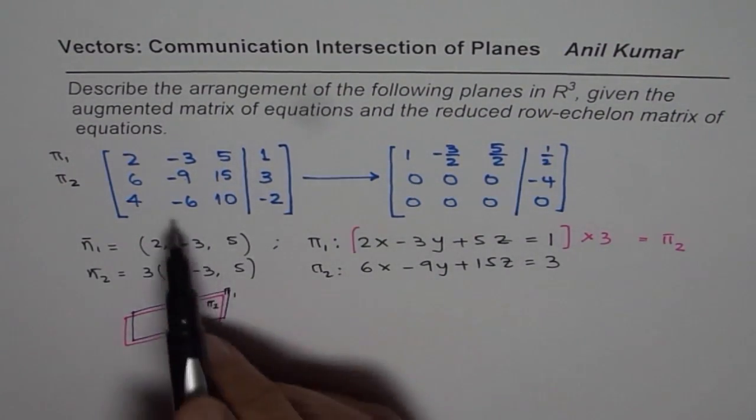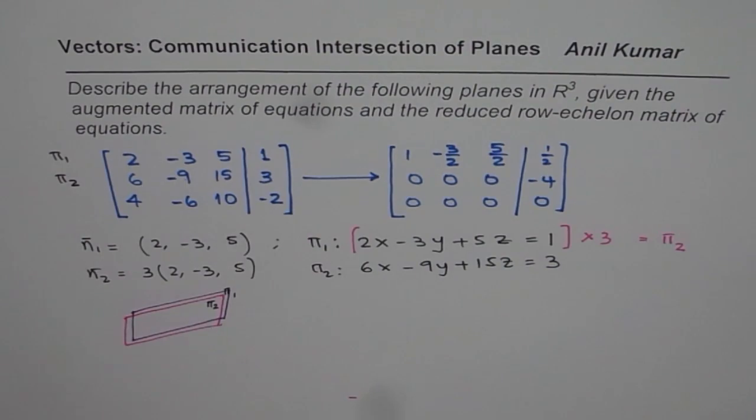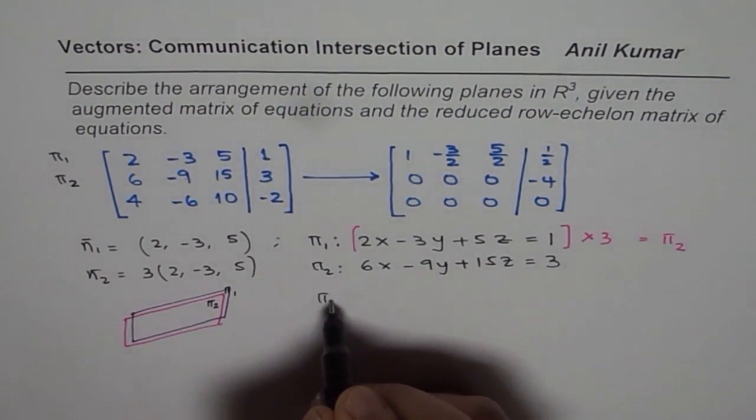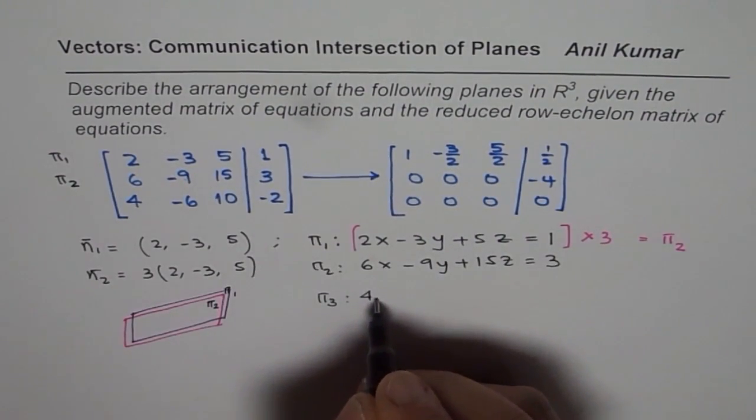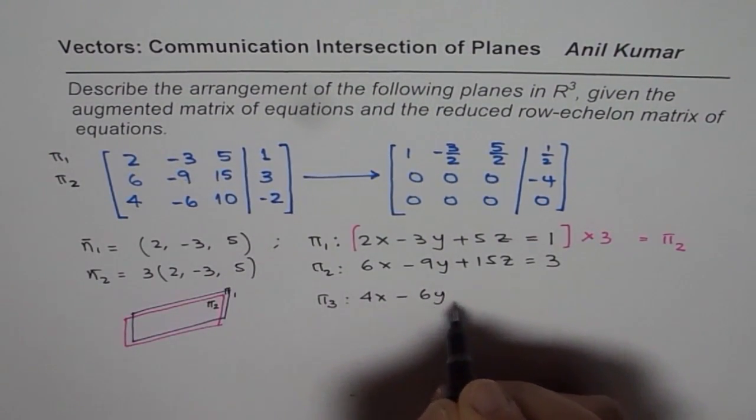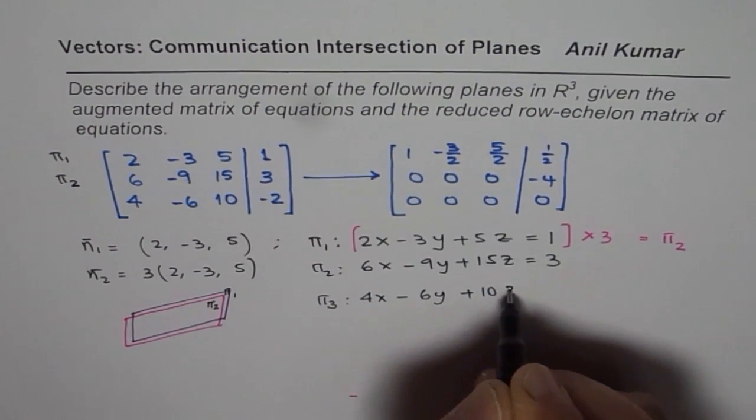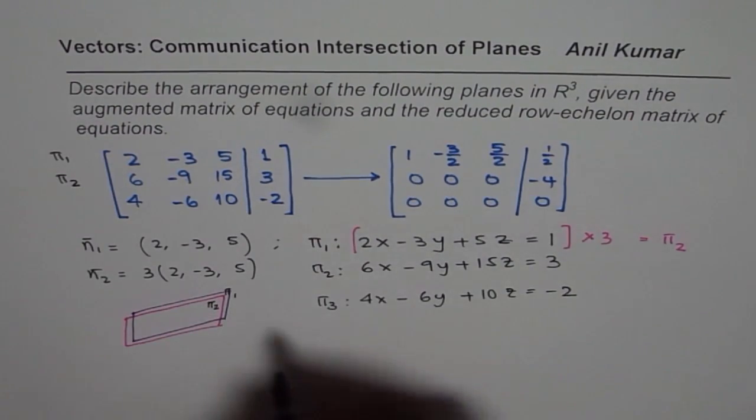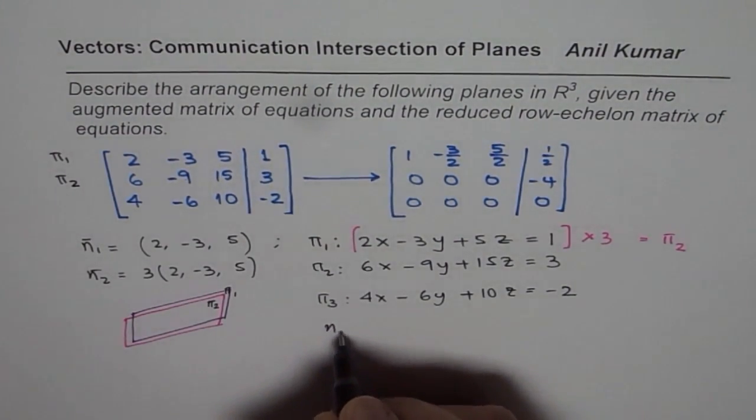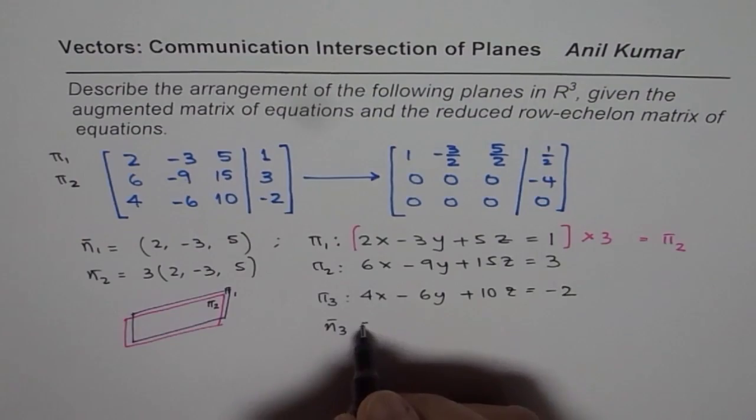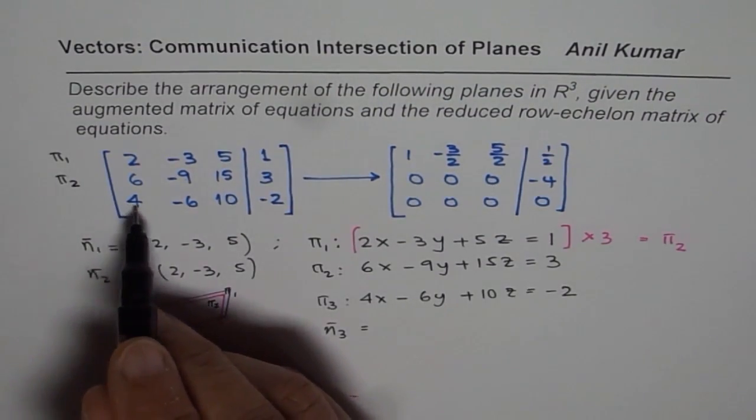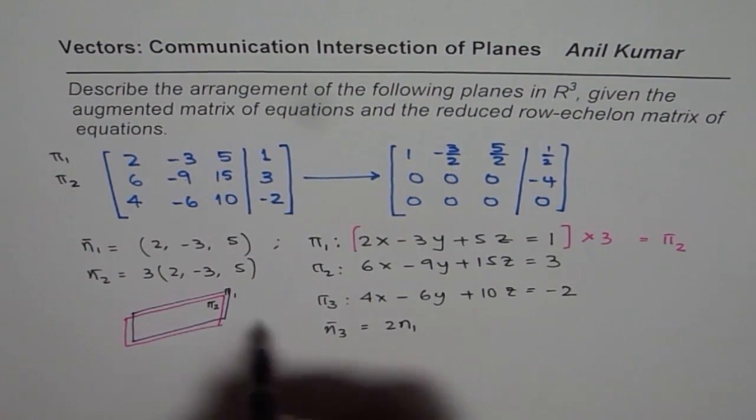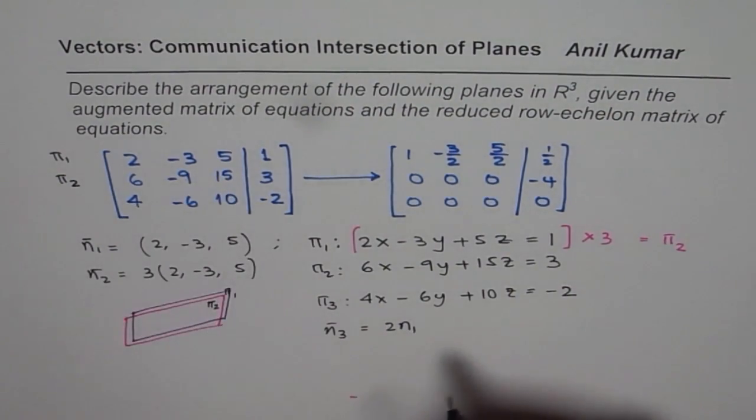Now how about the third plane? If you analyze the third plane π3 then π3 could be written as 4x minus 6y plus 10z equals to minus 2. Now in this particular case as far as the normal is concerned n3, n3 is definitely 2 times n1.